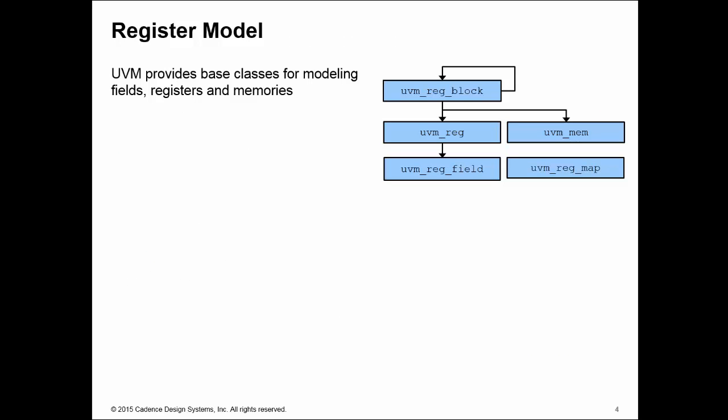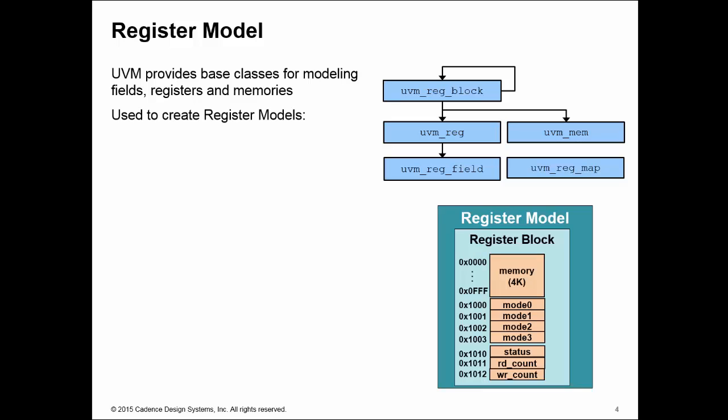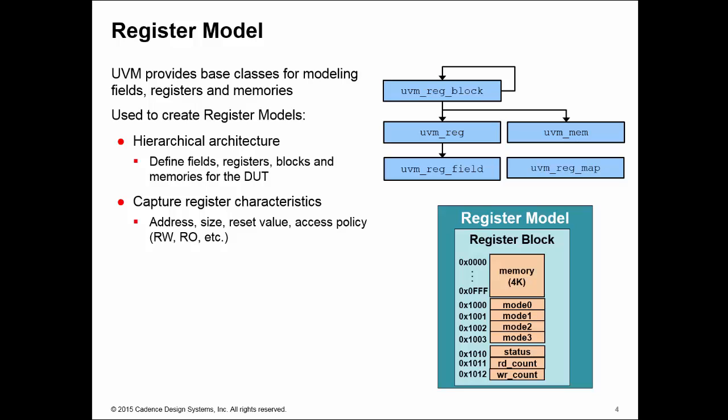UVM provides a series of base classes to allow you to create the register model. These base classes are hierarchical, so you can define a certain number of bits as a field within a register, and a certain number of registers make up a block of registers. You can have memories, blocks, and registers in a hierarchical architecture. You can also capture the characteristics of the register: the address, size, reset value, and access policy. You can link a name to an address register, so instead of referencing register address 1000 all the time, you can use the name - for example, mode_0 - and the register model knows that mode_0 is at address 1000, making your code much more readable.